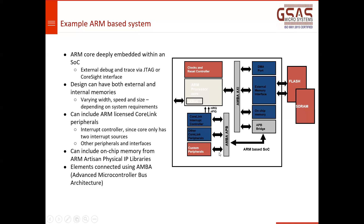The APB bus is connected to the AMBA bus through a bridge. This bridge determines the operating frequency for the connected blocks — whether it's half speed, one-fourth, one-eighth, or full speed.